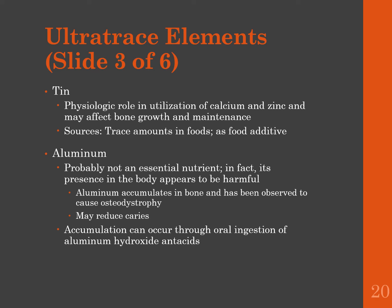Aluminum is probably not an essential nutrient, and its presence in the body appears to be harmful. Aluminum accumulates in bone and has been observed to cause osteodystrophy. It is thought aluminum may reduce caries, but more research is needed. Accumulation can occur through oral ingestion of aluminum hydroxide antacids. There is controversy about aluminum's effects, but if concerned, avoid those products. Aluminum is also found in some deodorants, and aluminum-free versions are increasingly available.